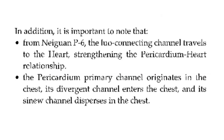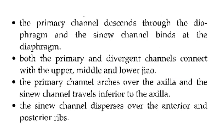The pericardium primary channel originates in the chest. Its divergent channel enters the chest and its sinew channel disperses in the chest. The primary channel descends through the diaphragm and the sinew channel binds at the diaphragm. Both the primary and divergent channel connect with the upper, middle, and lower jiao. The primary channel arcs over the axilla and the sinew channel travels to the axilla.